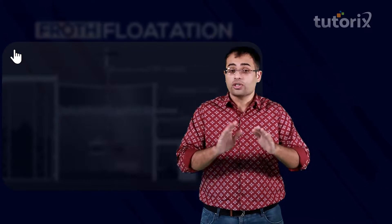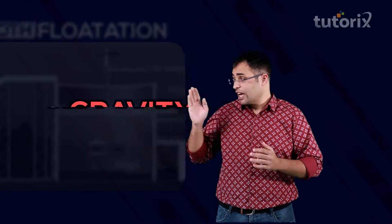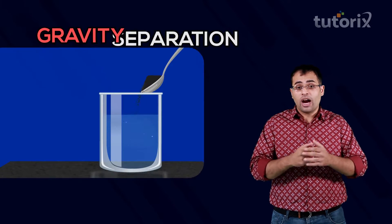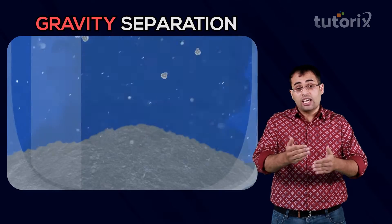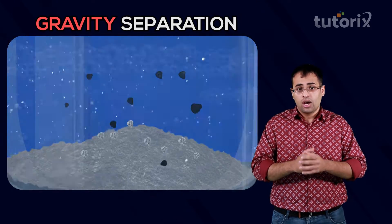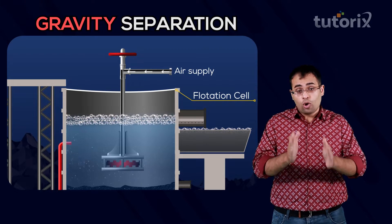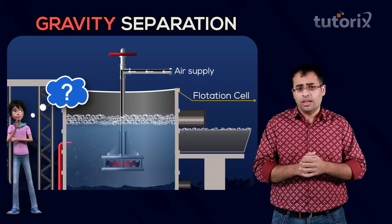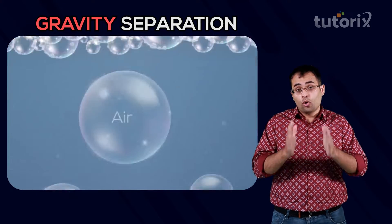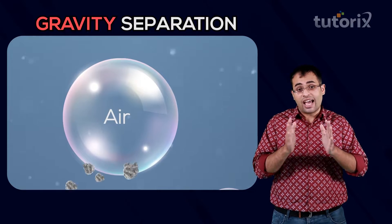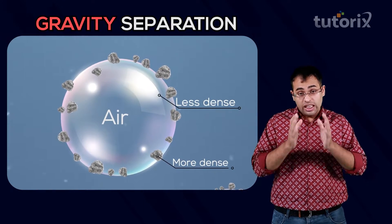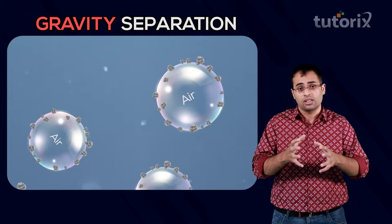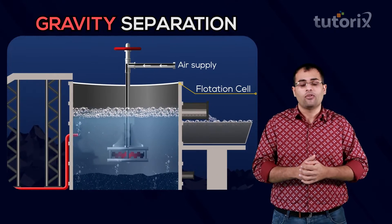Here I would like to pause and remind you of the process of gravity separation. In gravity separation, ore particles being more dense than gangue particles sink faster in water. However, here the opposite is happening — the ore particles are floating and the gangue particles are sinking. This is because the more dense ore particles attach themselves to less dense air bubbles, making the whole system less dense than water, so the air bubbles carry the ore particles to the surface as froth.